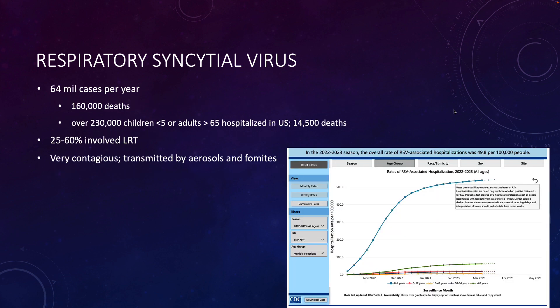It's estimated that there are worldwide 64 million cases per year, leading to 160,000 deaths. The two population groups most at risk are children under the age of five and adults over the age of 65. For those two groups combined every year, there are over 230,000 patients hospitalized in the U.S., with a combined 14,500 deaths.